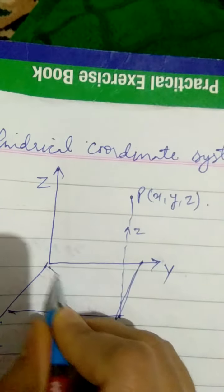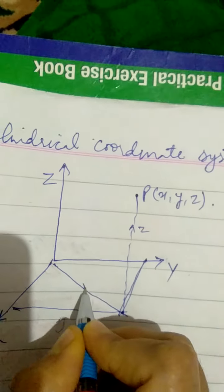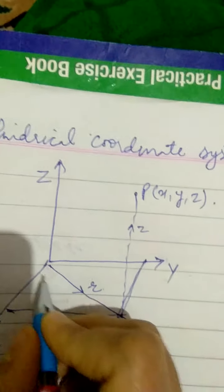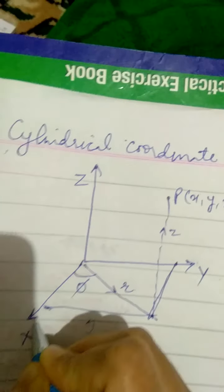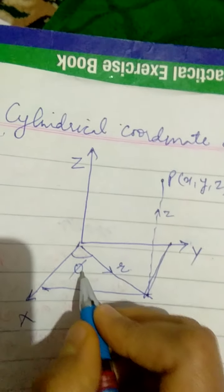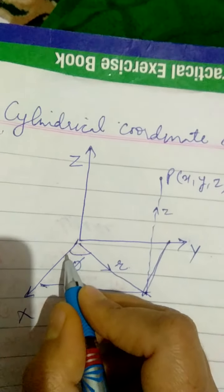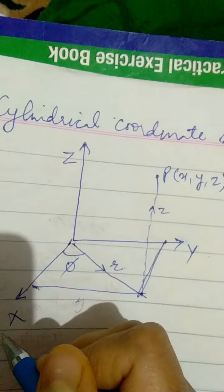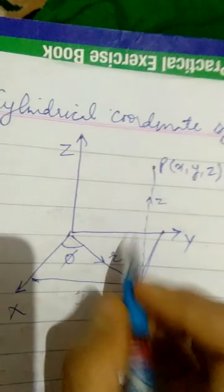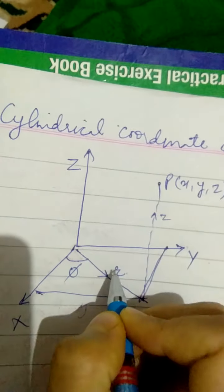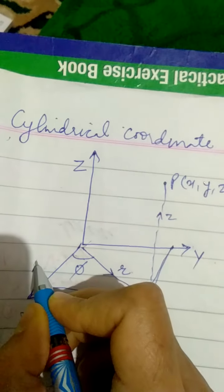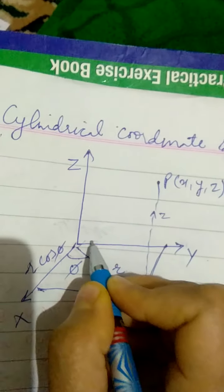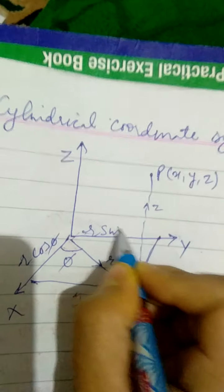Now if r is the radius vector pointing along the direction of the radius of the cylinder, and it makes an angle phi with the x-axis — remember this phi is having a direction from x to y, that is in the counterclockwise direction — then the component of r along the x-axis will be r cos phi, and obviously along the y-axis it will be r sin phi.